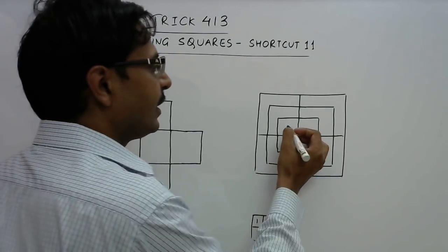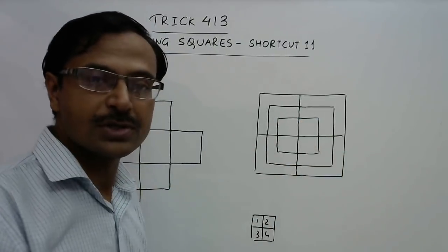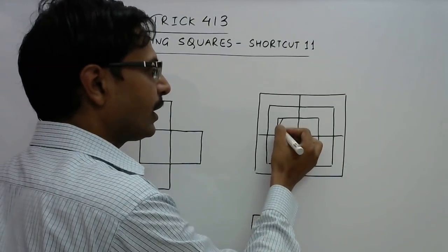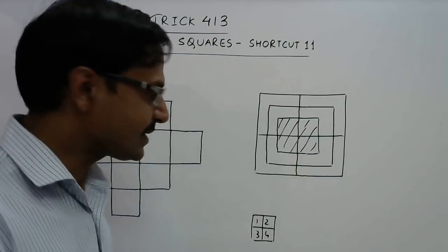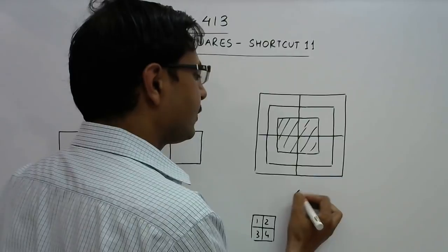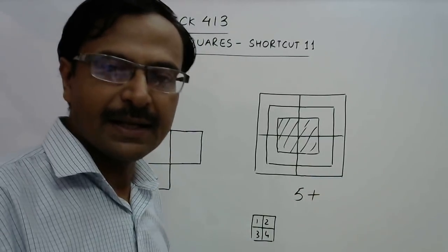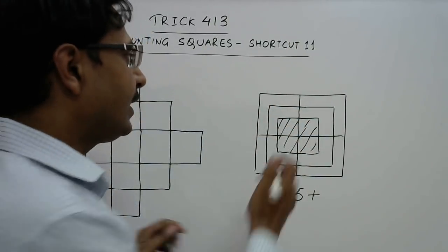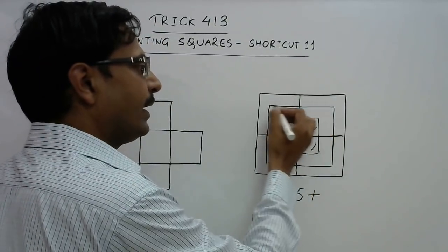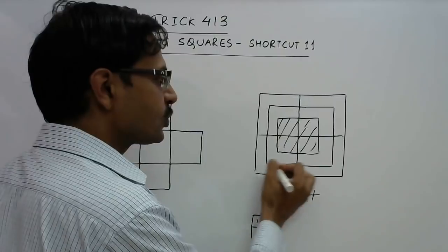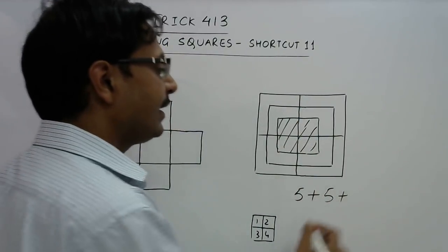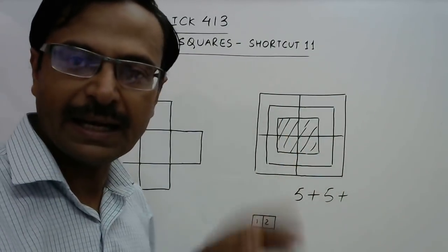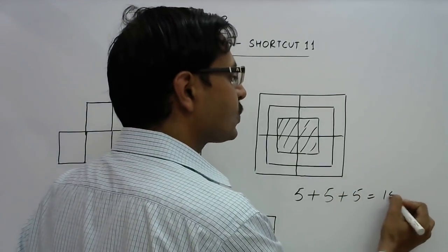If we consider the innermost square, it is divided into four smaller squares, giving five squares for that shaded portion. Then considering the next square — the intermediate one between the outer and inner square — it is again divided into four parts, giving five more squares. Finally, we have the largest square again divided into four smaller squares by the horizontal and vertical line, giving five more squares. So you have 15 squares in total.